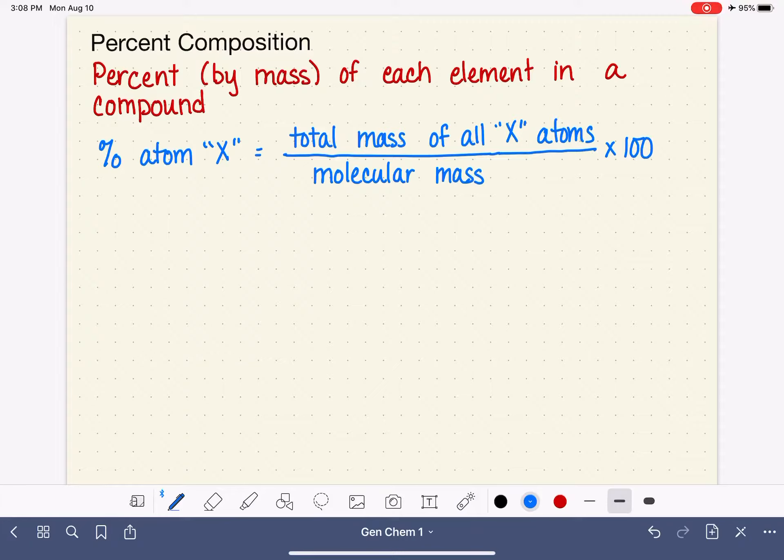It's kind of weird when you look at it in a formula, but when you see it used in an example, you'll see that this is quite simple. So we're going to do a sample problem. What is the percent carbon and percent hydrogen for the compound CH4?